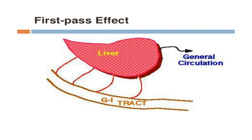The amount of drug that reaches the systemic circulation after oral absorption is known as bioavailability. First pass metabolism is the metabolism that takes place in the liver after oral administration, and bioavailability is the amount of drug that ultimately reaches the systemic circulation.